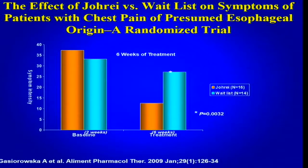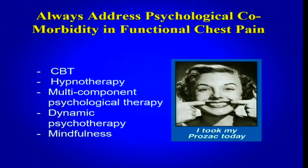Studies looking at alternative approaches such as energy healing — Jorei and Reiki — in patients with functional chest pain have shown significant improvement in symptoms. Psychological comorbidities should always be addressed in functional chest pain patients. There is substantial data supporting cognitive behavioral therapy, most of it currently coming from the psychiatric literature, as psychiatrists manage many of these patients. Cognitive behavioral therapy, hypnotherapy, and mindfulness have all been areas of great help to these patients.